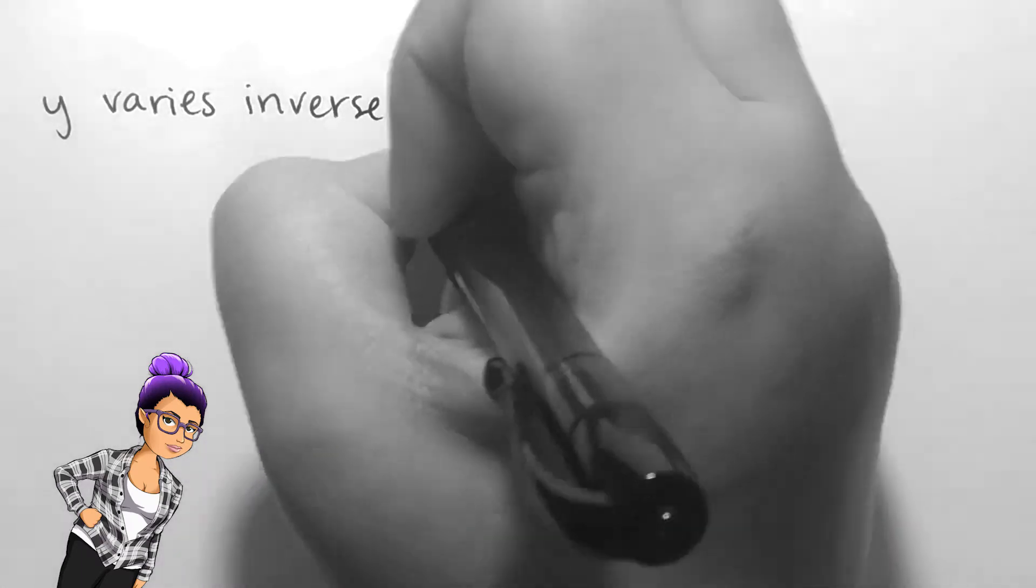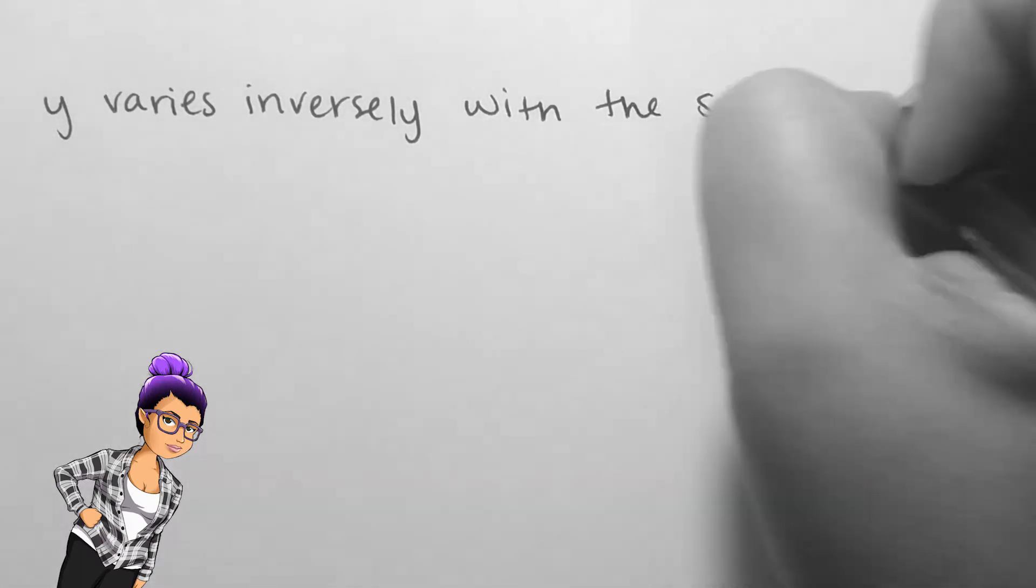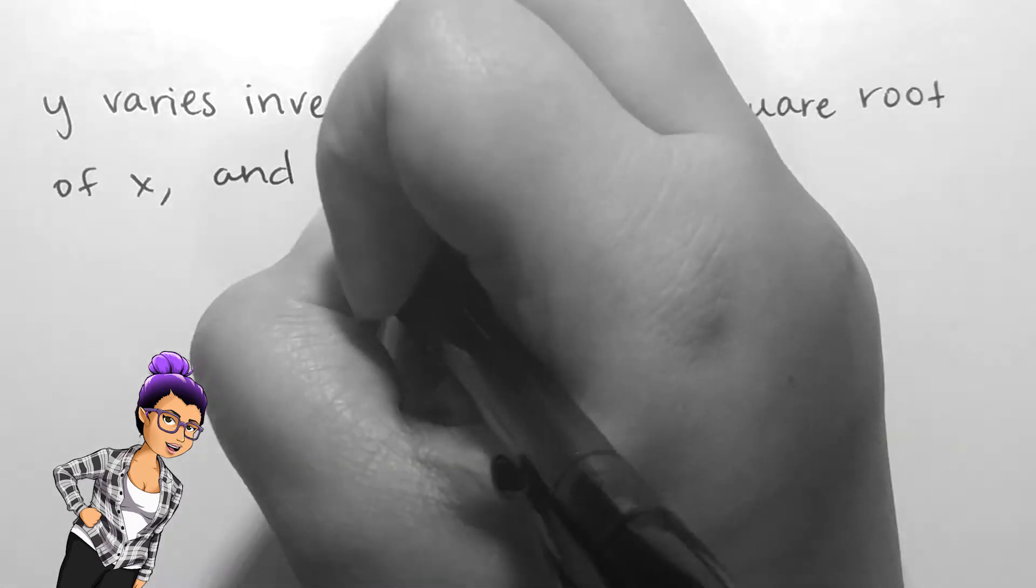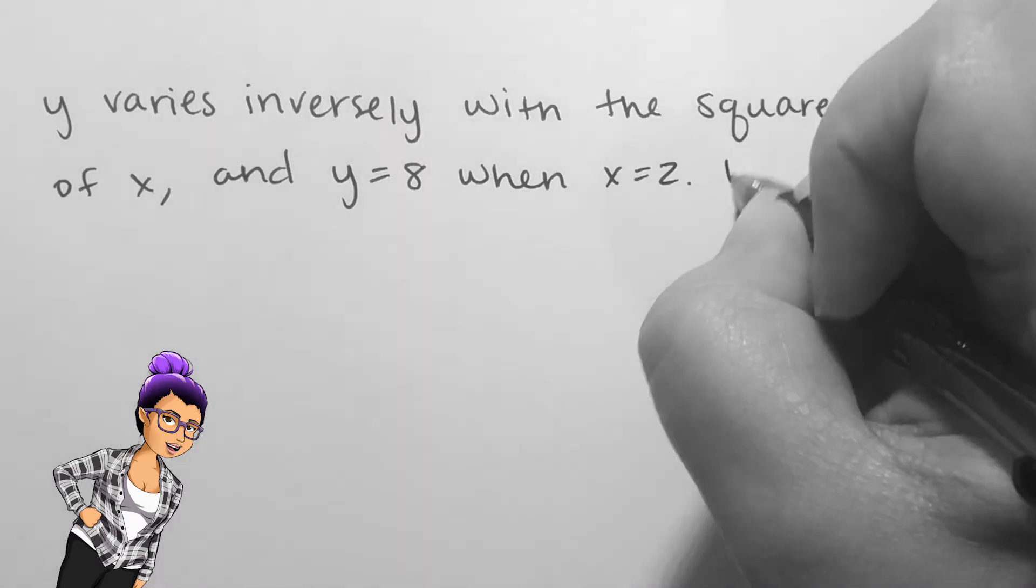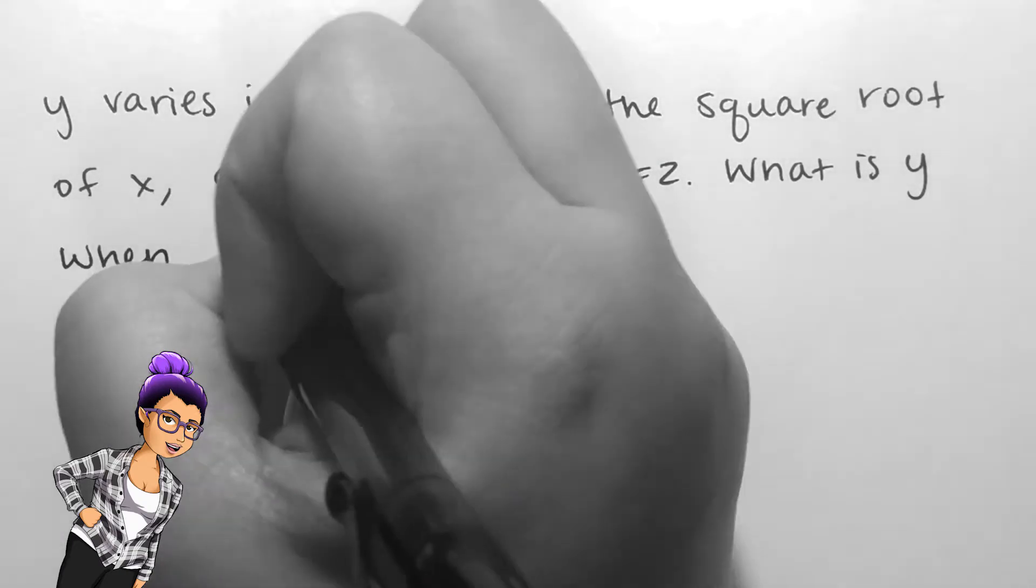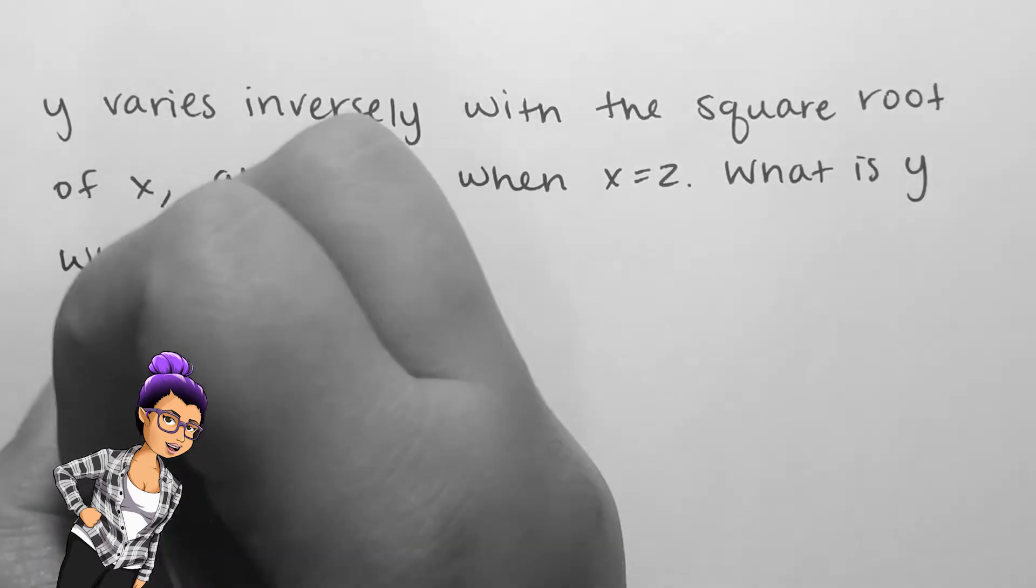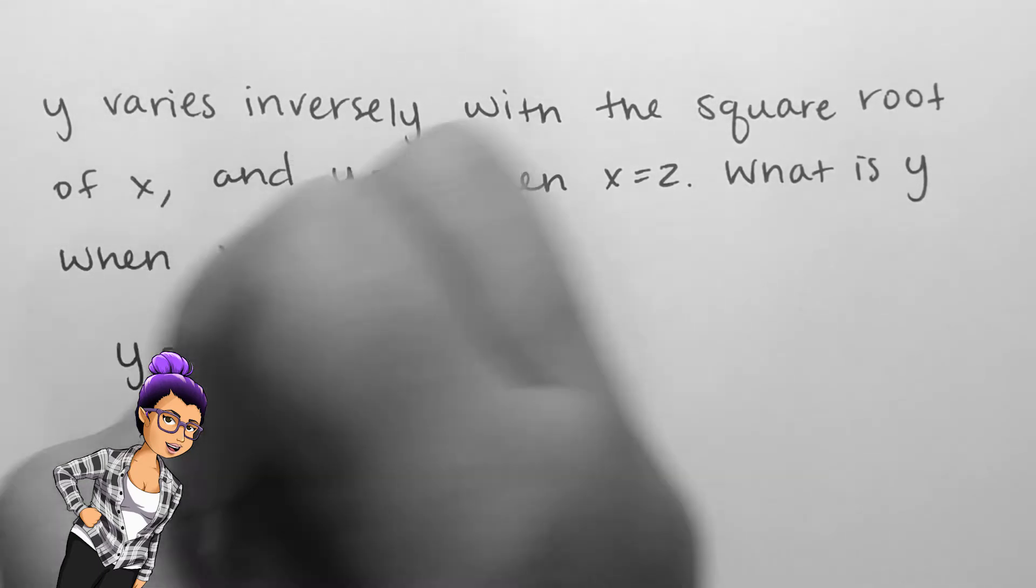If y varies inversely with the square root of x and y equals 8 when x equals 2, then what is y when x equals 5? As always, unless told otherwise, our answers should be exact.